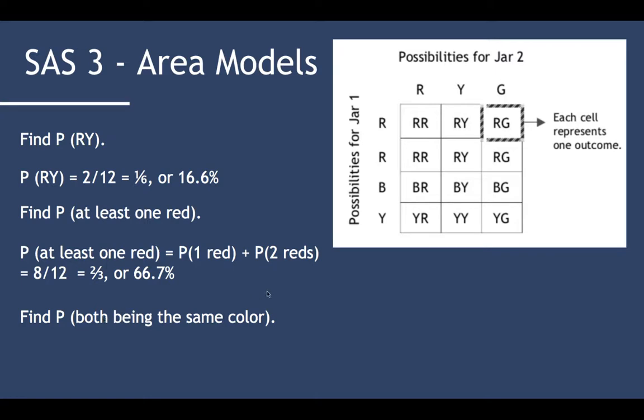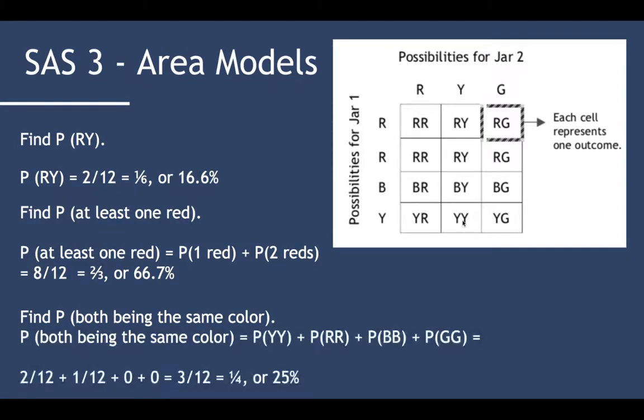How about find P(both being the same color)? Well, there's one, two, three. Notice there's no green marbles, so all we got is the green represented by the cubes. So that is both same color: one, two, three. Should be three out of twelve. Yep, 2 + 1 + 0 + 0 is 3 out of 12, or one-quarter, 25%.